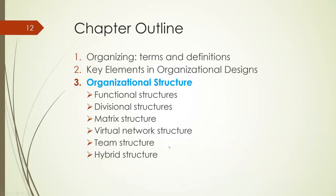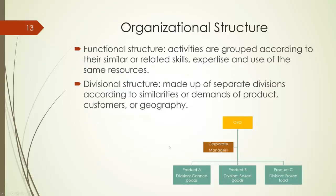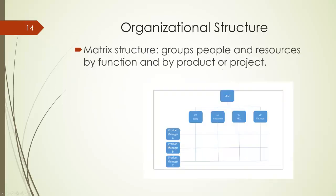In Section 3, we will look at six common organizational structures such as functional and divisional structures. Functional structures group activities according to their similar or related skills and use of the same resources. A divisional structure, on the other hand, is made up of separate divisions according to similarities or demands of products, customers, or geography. The figure shown here is a divisional structure under product groups of canned goods, baked goods, or frozen food divisions. Another type of structure is a matrix structure, which groups people and resources by function and also by product or project. The matrix combines advantages of both functional and divisional structures simultaneously.